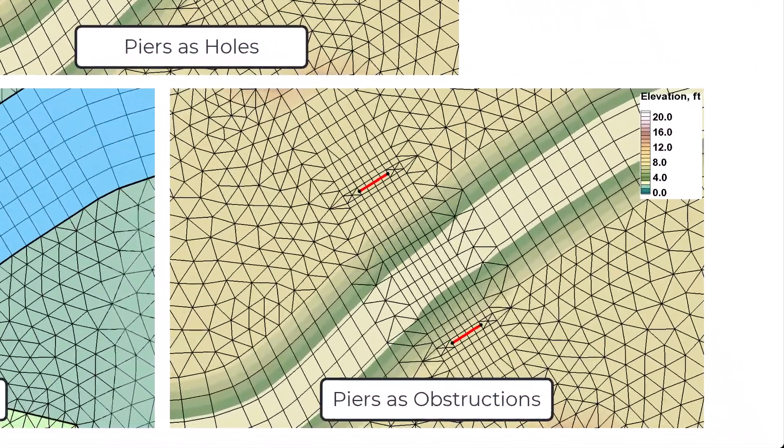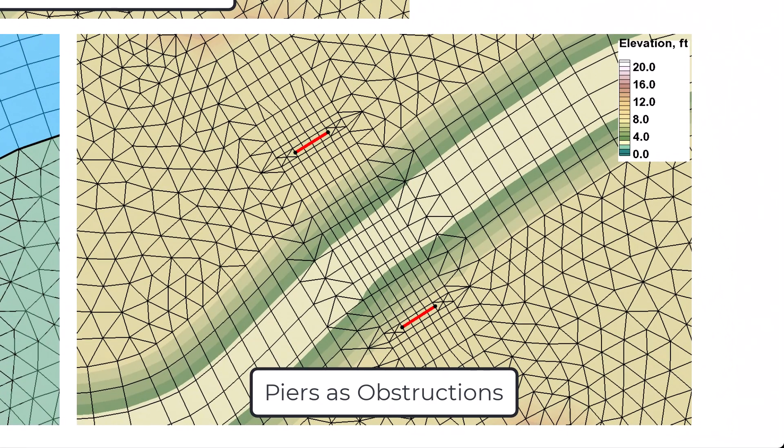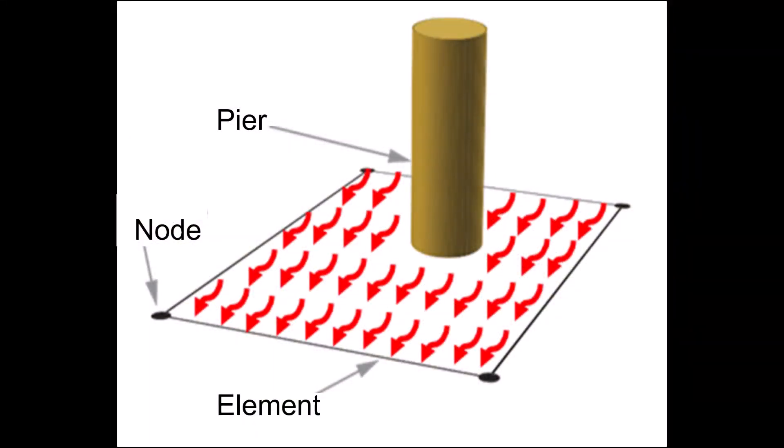The third method is to use an obstruction to represent the piers. Obstructions are useful when the pier's size is small compared to the typical elements, but they will not represent detailed hydraulics at the pier location.